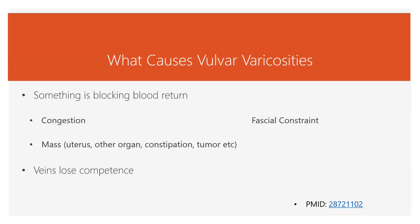Things that can block blood return include congestion — that's fluid. You're having a problem draining fluid because there's too much fluid in the tissue that's outside of the channels. So we need to find out where that congestion is coming from and get all the fluid — whether it's blood or lymph — back into the channels and moving again.